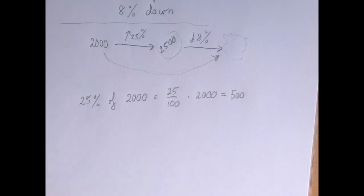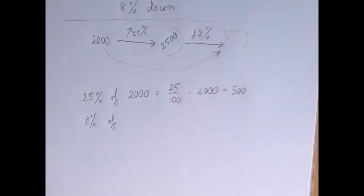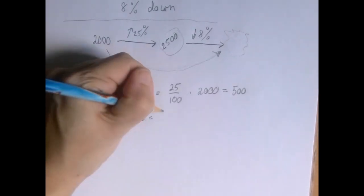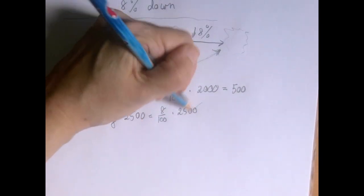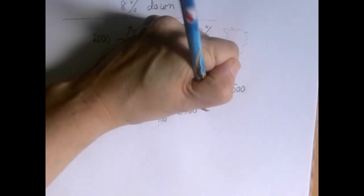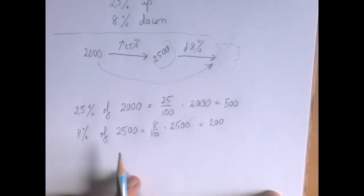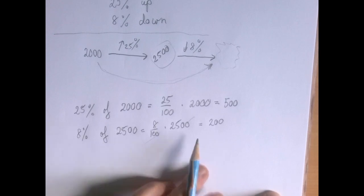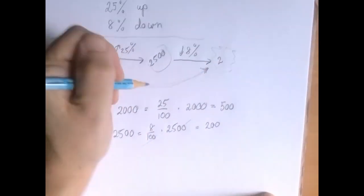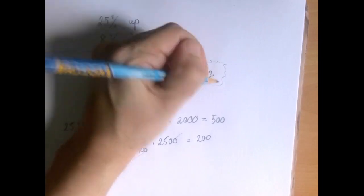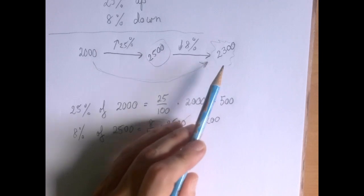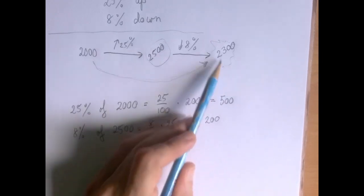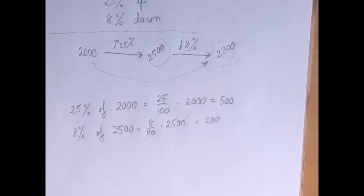So now what we're going to have to do is we're going to have to decrease it by 8%. So we're going to compute 8% of 2,500, and that's 8 over 100 times 2,500. So the 100s cancel out just like that. So that's 200. So what does that mean? 8% of 2,500 is 200, so this is the loss. So we're down from 2,500 to 2,300, right? That's just a net increase of 300.